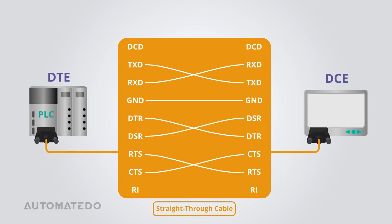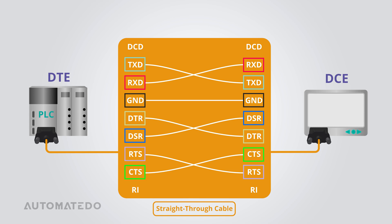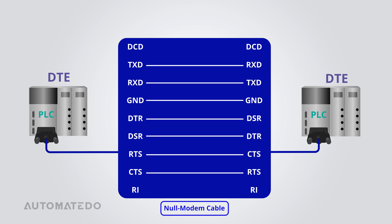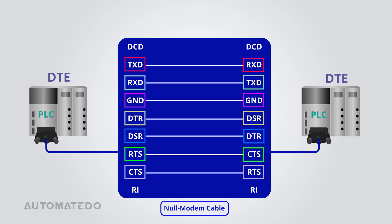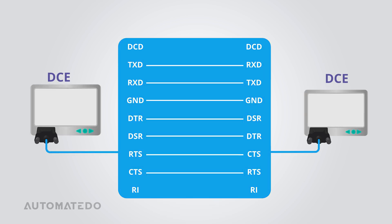To connect a DTE device to a DCE device, a straight-through cable is necessary as it aligns the same pins on both connectors. When connecting two DTE devices, a non-modem cable is used — transmit data from one device connects to receive data of the other, and receive data connects back to transmit data. The signal ground connects both ends. If hardware flow control is used, lines like RTS to CTS and DTR to DSR can also be crossed. A crossover cable mirrors those internal connections of a non-modem cable, but is used to connect two DCE devices.